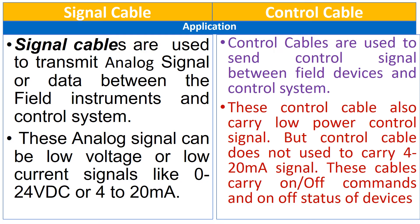While the control cables are used to send the control signal between the field devices and control system. These control cables also carry low power control signals. But the control cable does not carry any 4 to 20 mA signal. These cables carry on-off commands and on-off status of field devices.